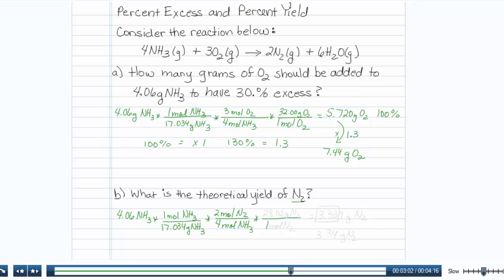Now it's just a matter of recognizing that 1 mole of N2 is 28.02 grams of N2, and we multiply all that out. And we are left with 3.339 grams of N2, and just to be sig fig concerned, we will see that is 3.34 grams of N2.